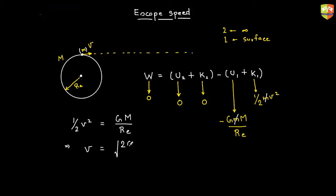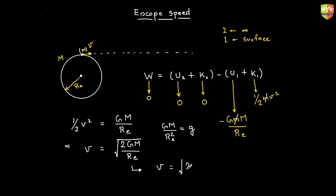From this we get v equals the square root of 2GM over R_e. Since GM over R_e squared equals g (acceleration due to gravity), this can also be written as root of 2gR_e. Substituting all the values, escape velocity equals 11.2 kilometers per second.